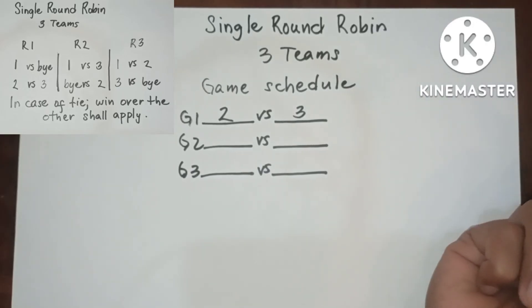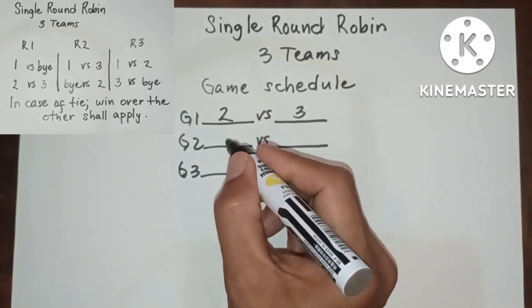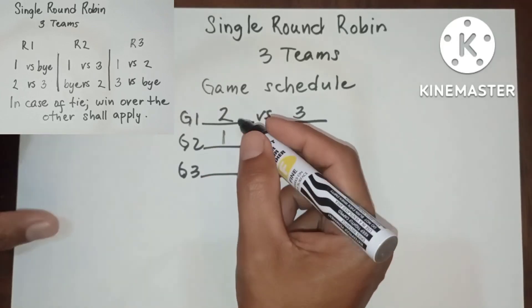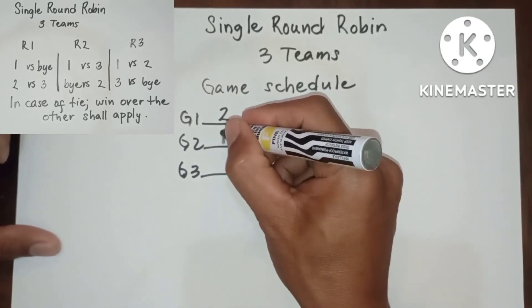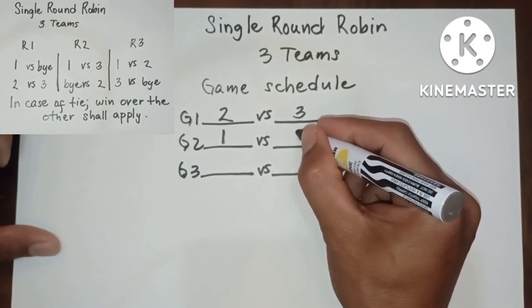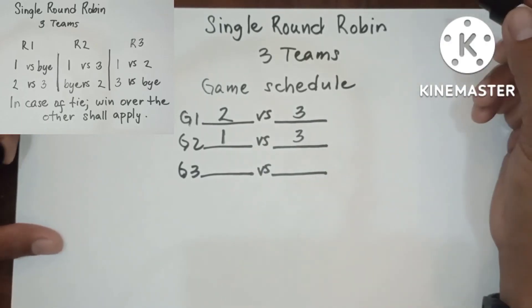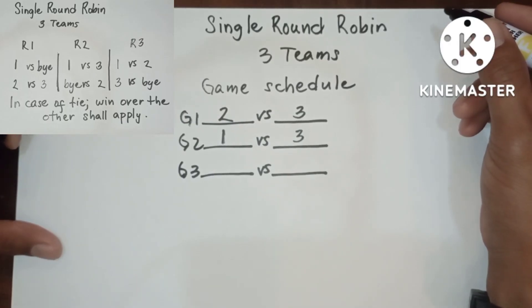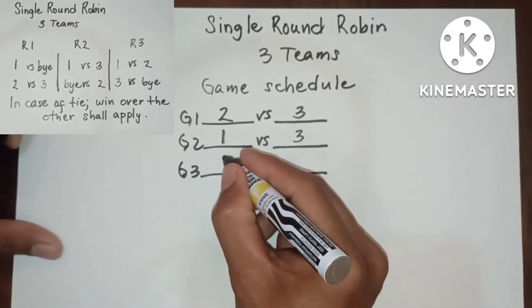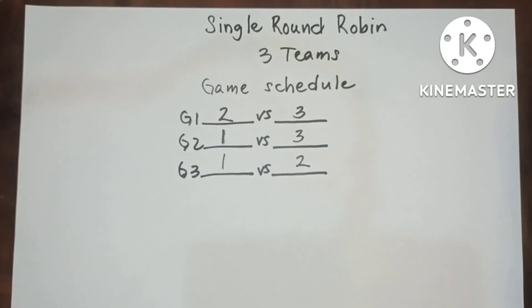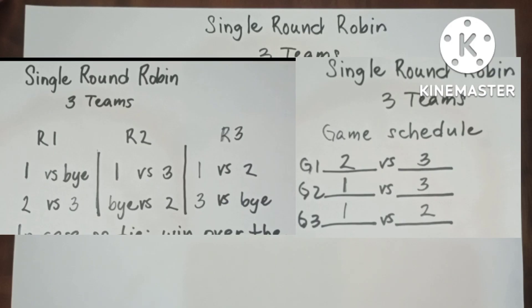In round 2, we only have 1 game again, 1 versus 3. This will be game 2. And in round 3, we have 1 versus 2. This will be game 3. This is the proper pairing and game schedule.